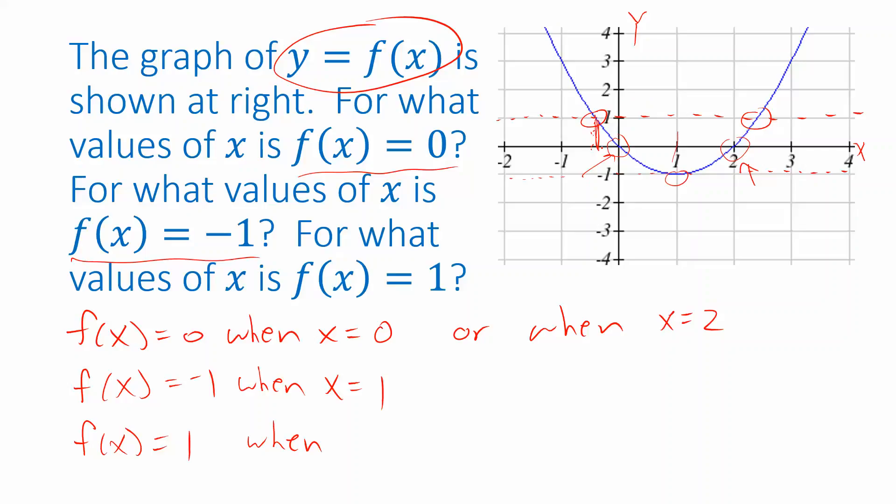This x value, it's negative, less than 0. It doesn't look like we're quite at negative 0.5, we're a little bit to the right of that. So I'm going to estimate when x is about negative 0.4. And the second point, that looks to me like approximately 2.4.